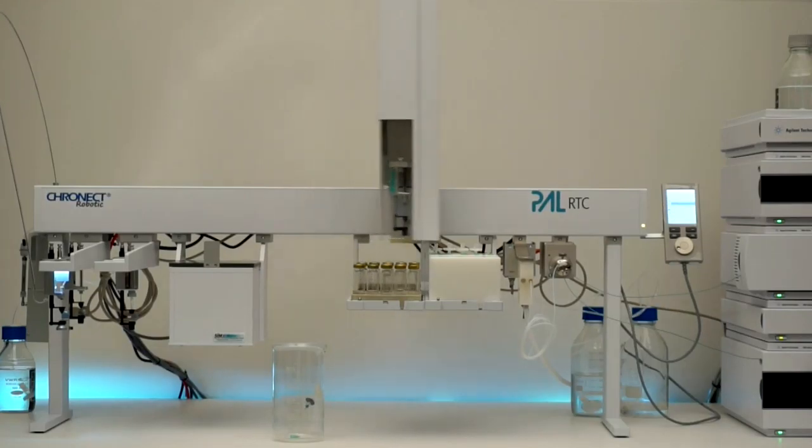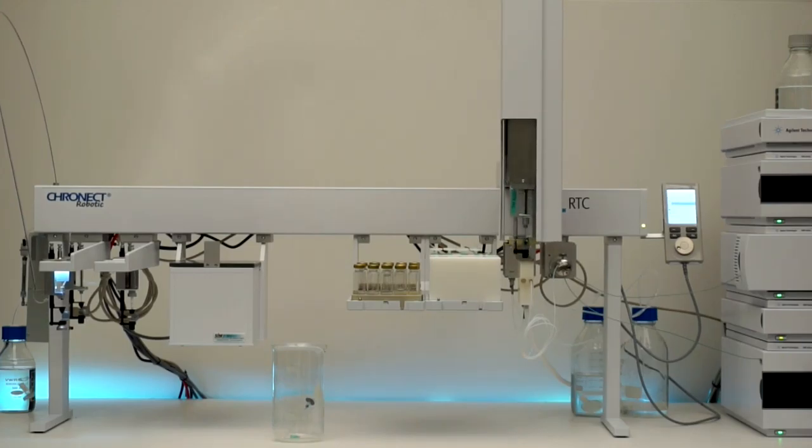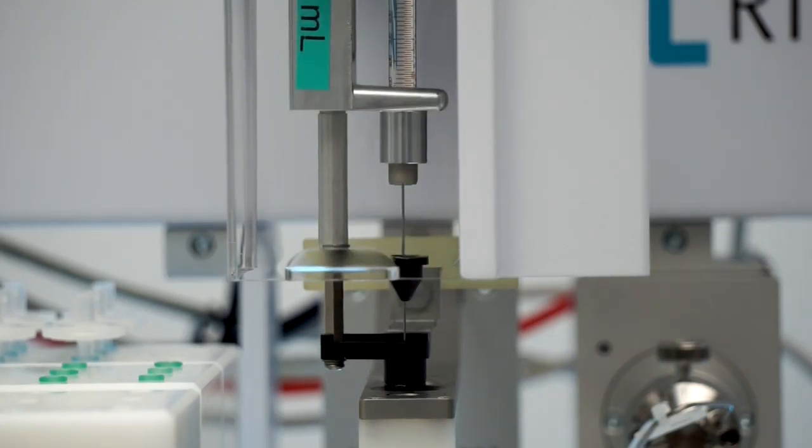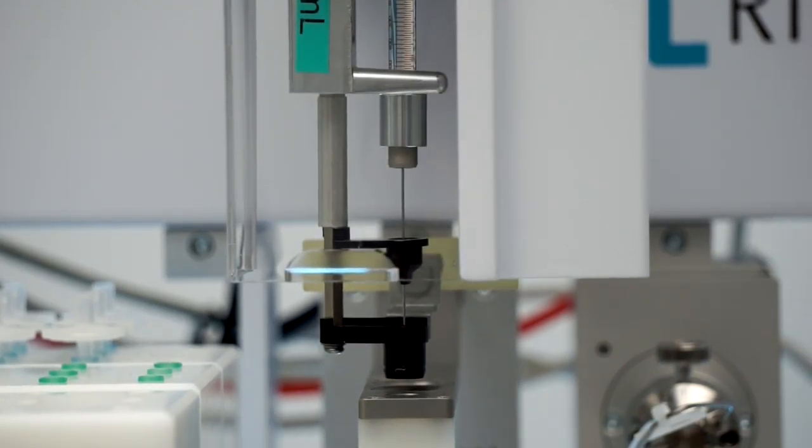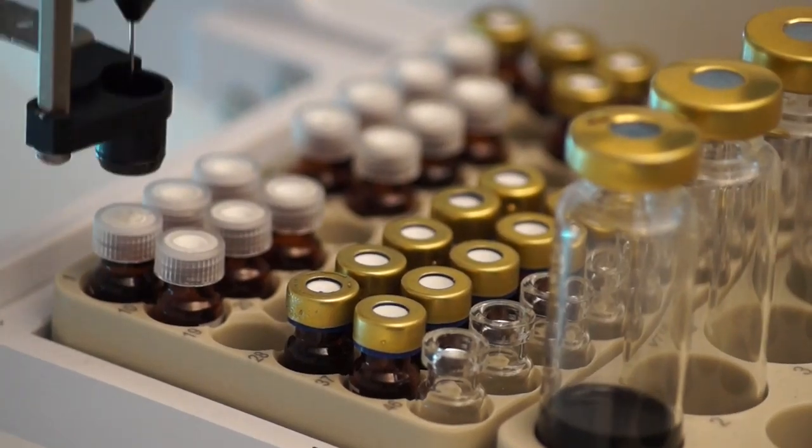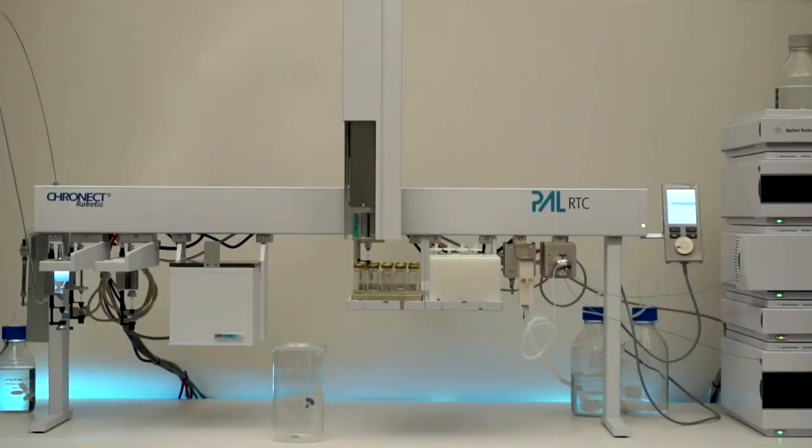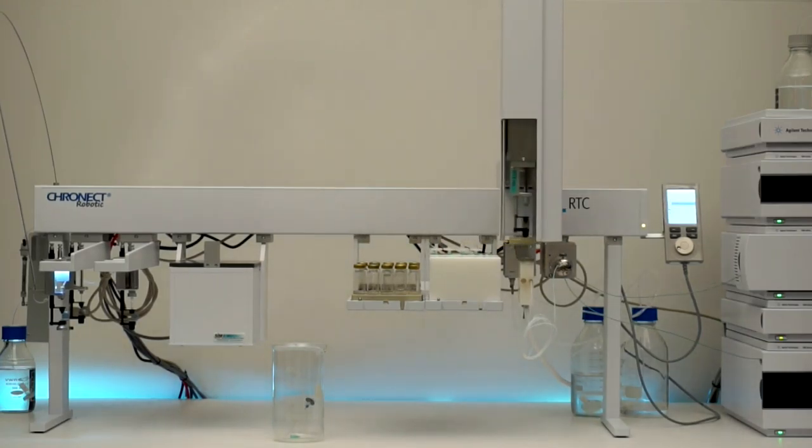The syringe is filled with solvent for dilution. This is then injected into the sample vial. The procedure is finished by flushing the syringe with solvents.